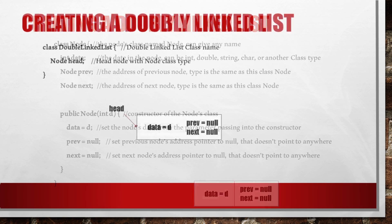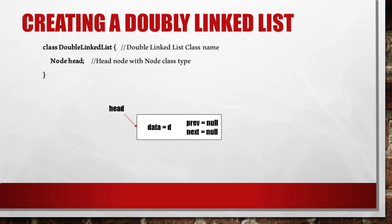Now we will create a doubly linked list class. The class is named DoublyLinkedList. Node head is the head node of type Node for the doubly linked list.